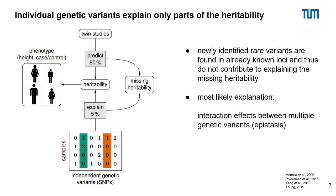Both studies could not explain the full heritability of height. Newly identified rare variants are found in already known loci and do not contribute to explaining the missing heritability. So most likely, epistasis could explain the missing heritability.